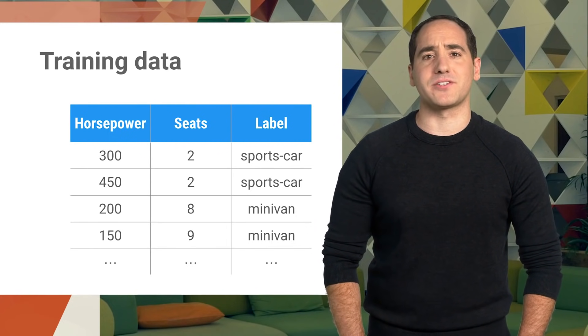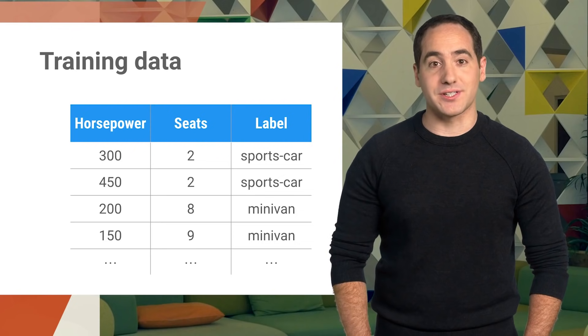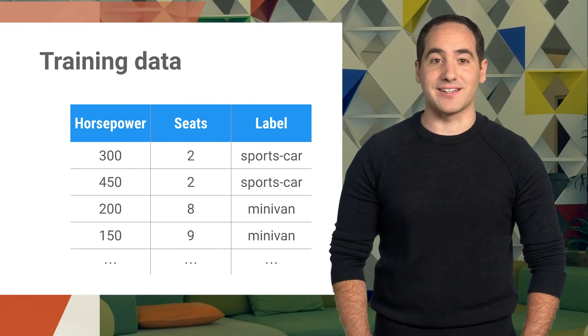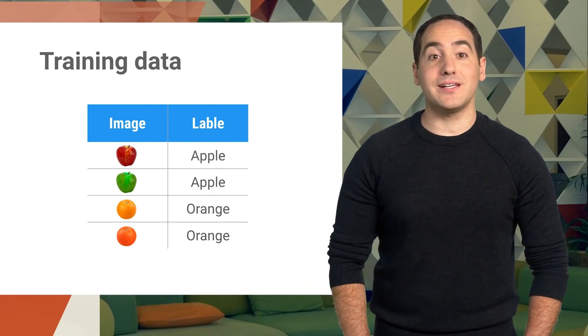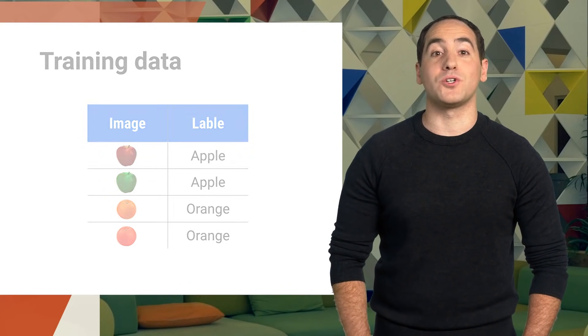Now, you might be wondering why we described our fruit using a table of features instead of using pictures of the fruit as training data. Well, you can use pictures, and we'll get to that in a future episode. But as you'll see later on, the way we did it here is more general.